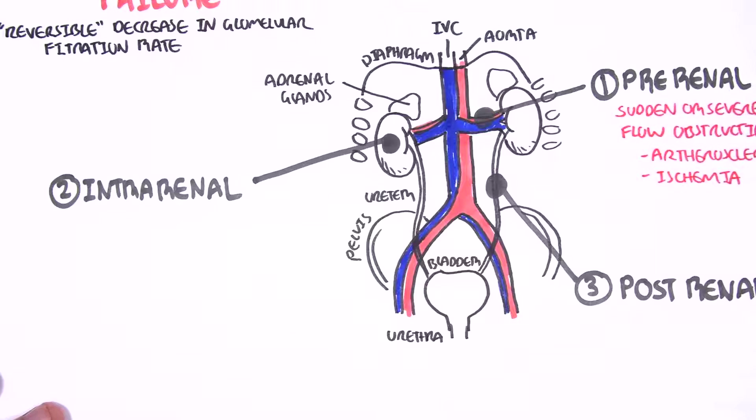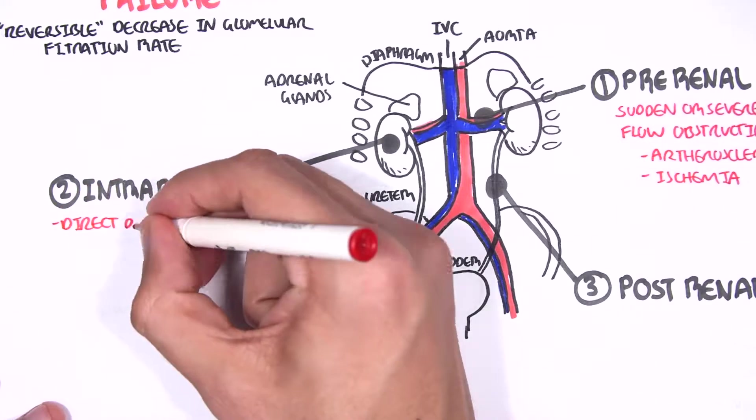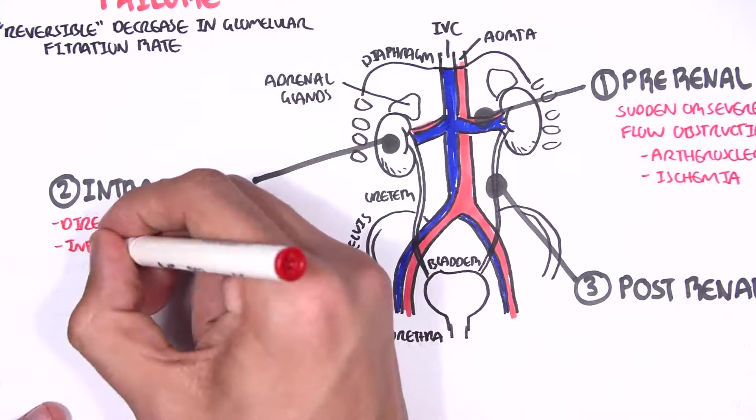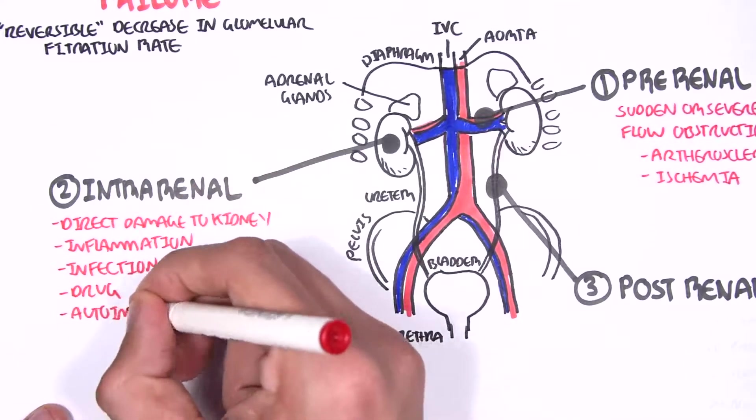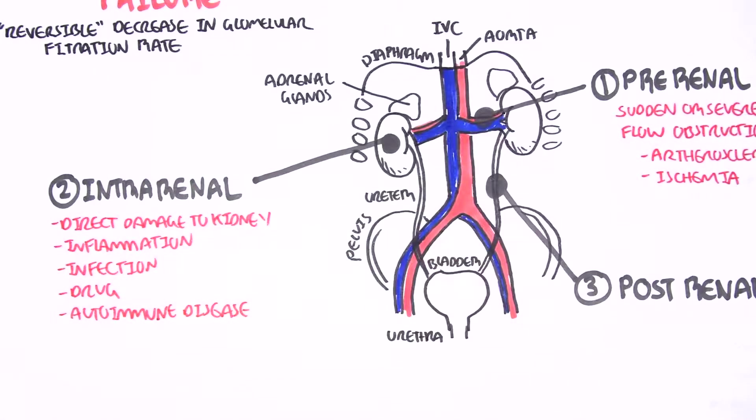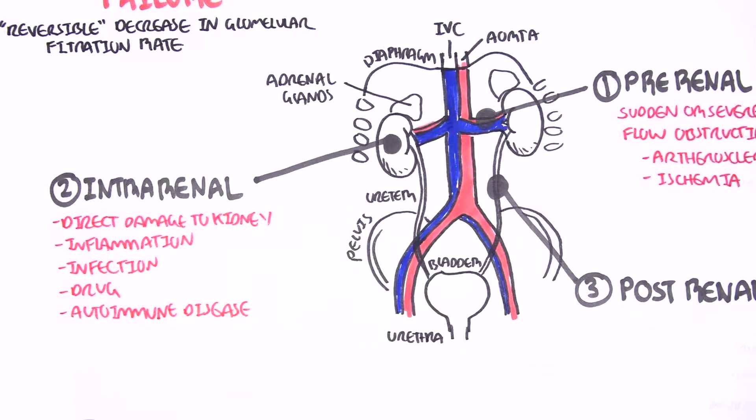Intra-renal causes include direct damage to the kidneys itself, inflammation within the kidneys, infection, drugs, as well as autoimmune diseases such as systemic lupus erythematosus.